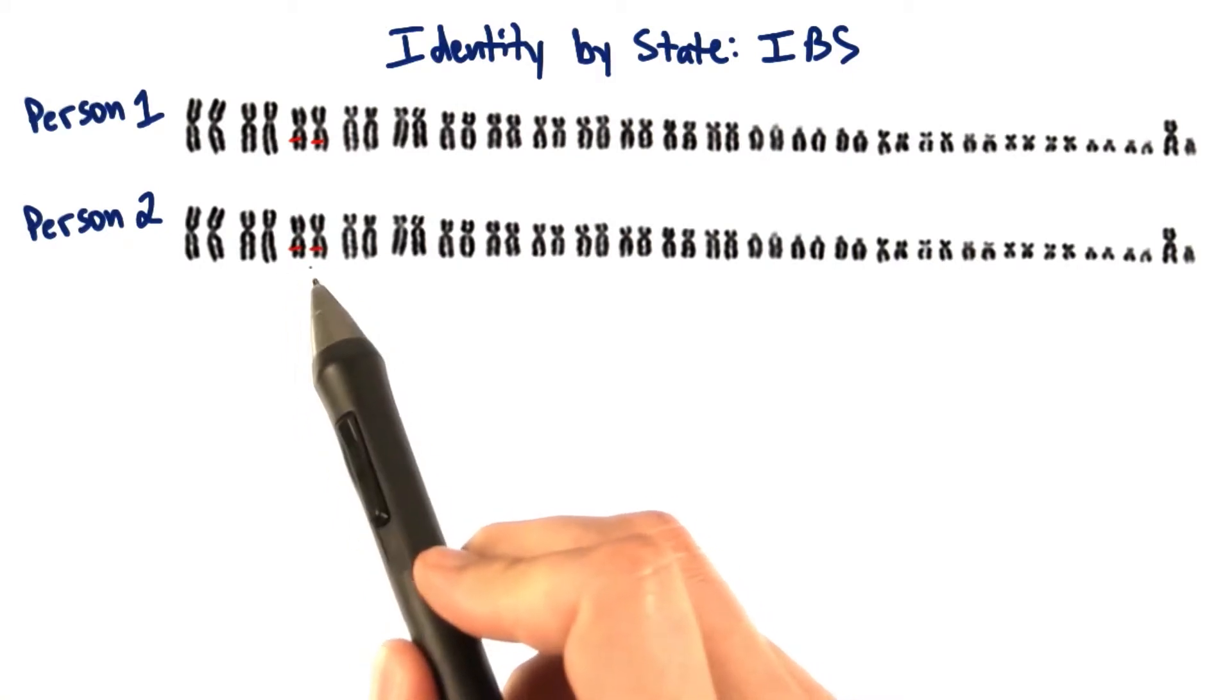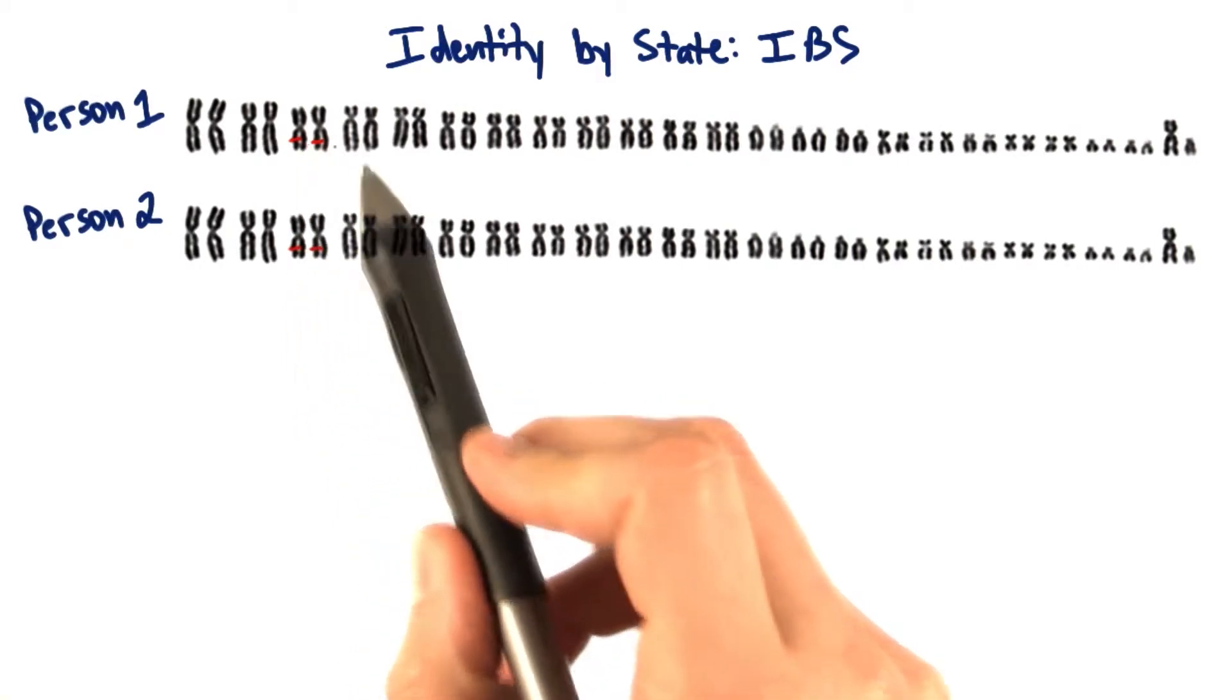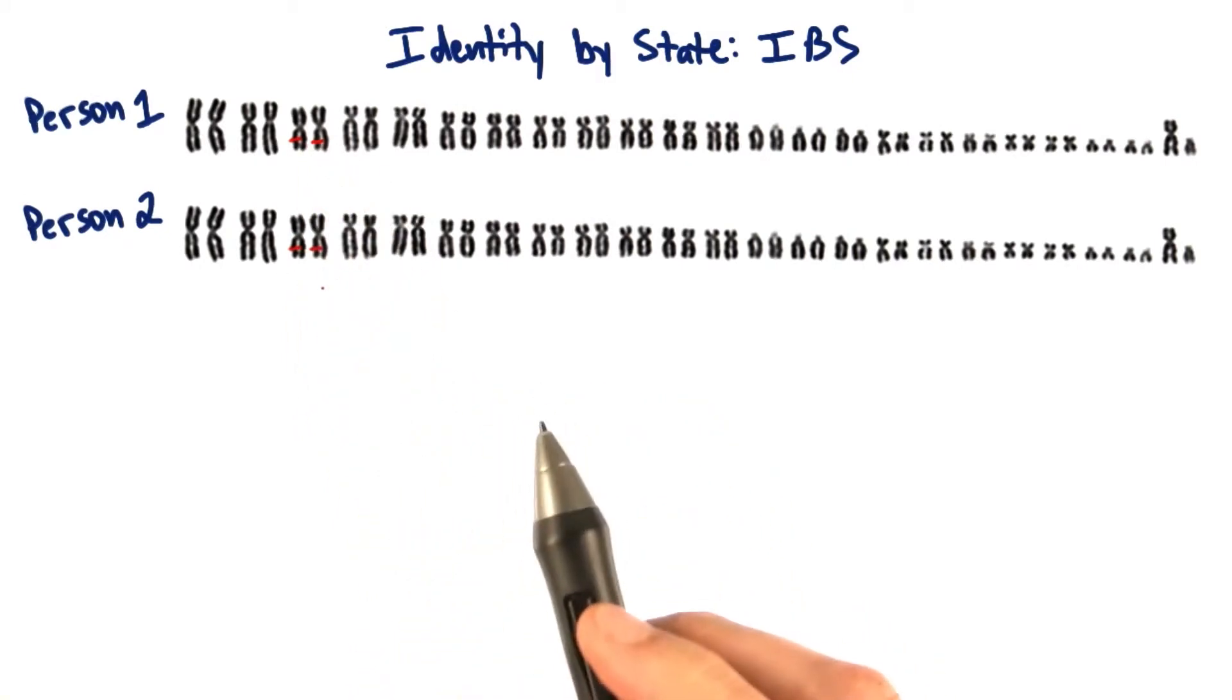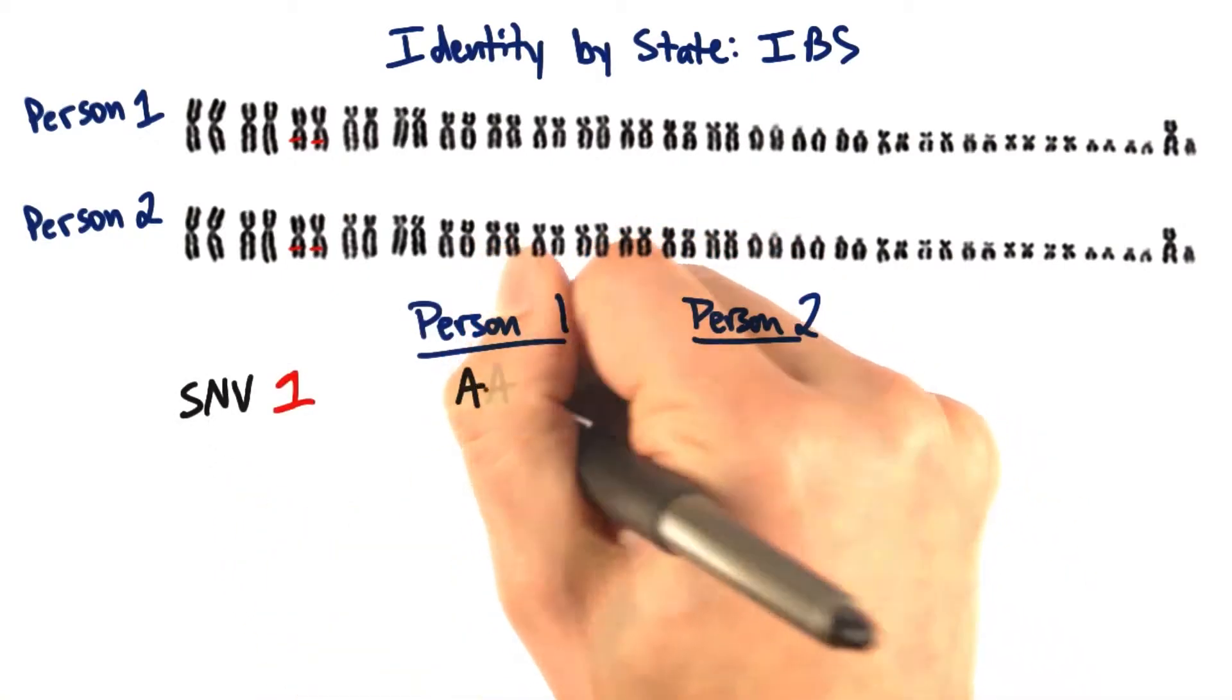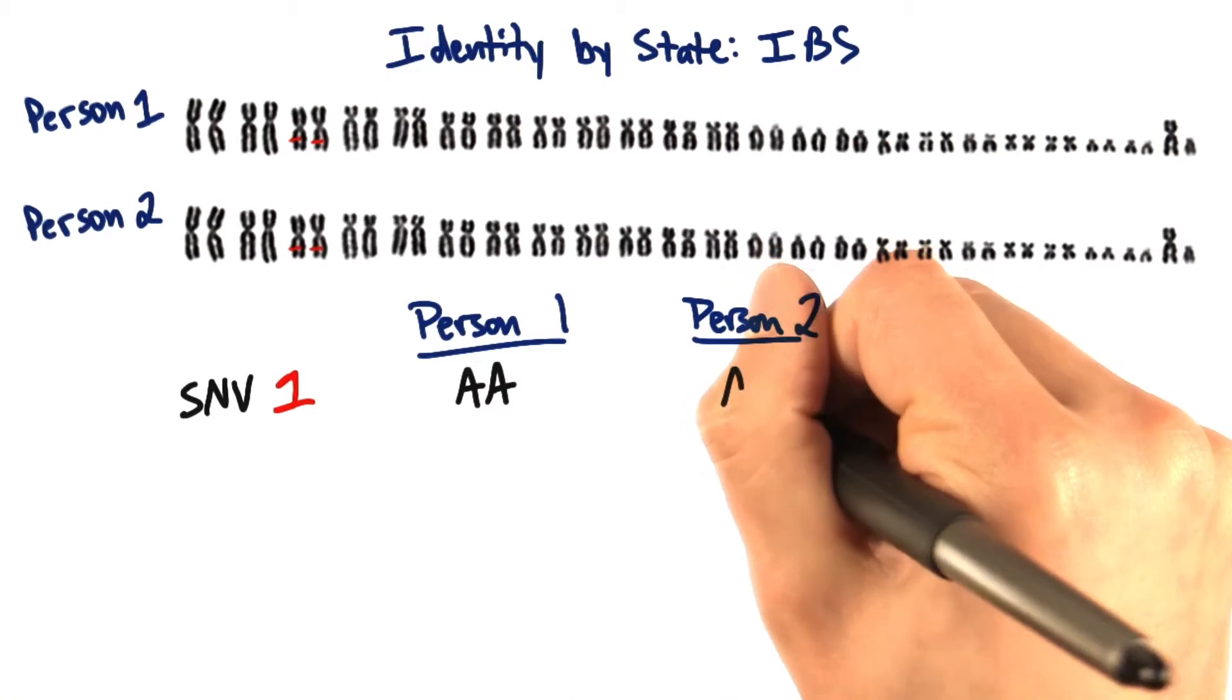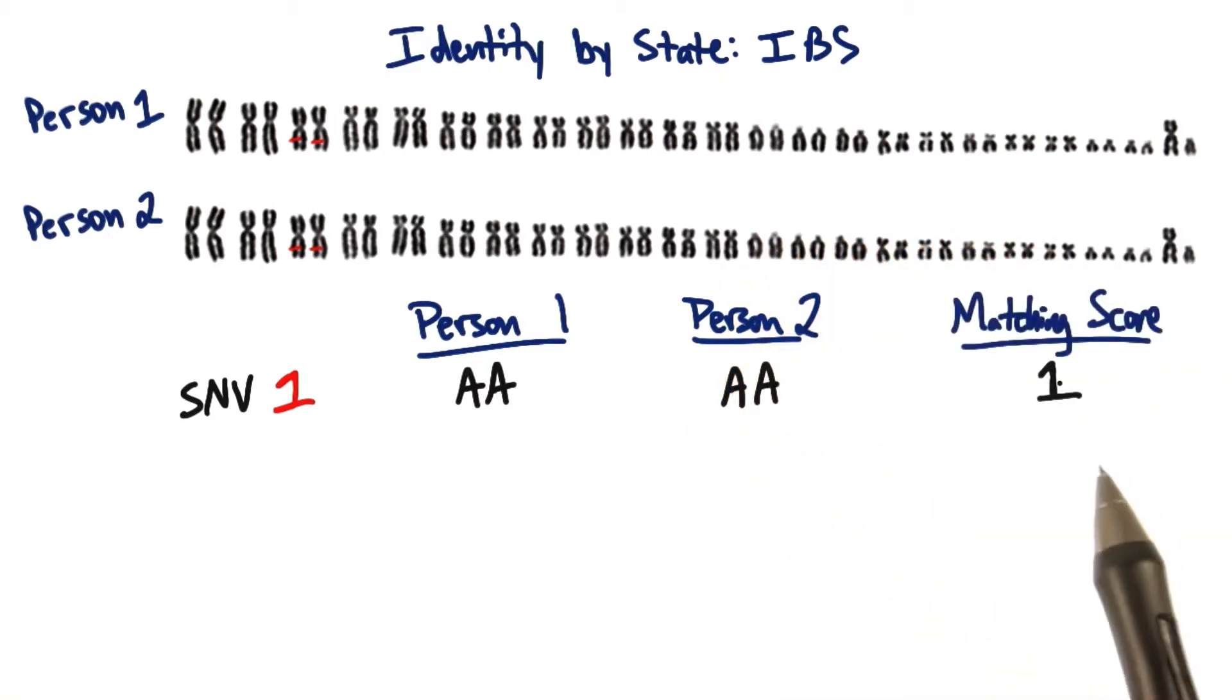I've marked the location of the SNV here in red in the genomes of person 1 and person 2. Person 1 may have two A alleles for SNV 1, just like person 2. Because person 1 and person 2 are identical at the site, we give them a score of 1.